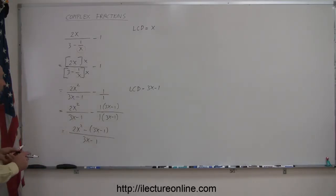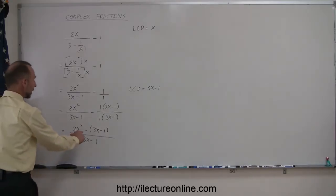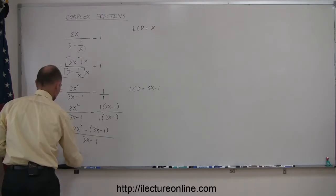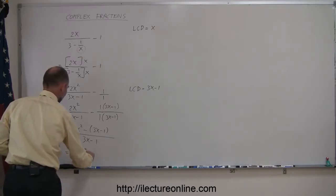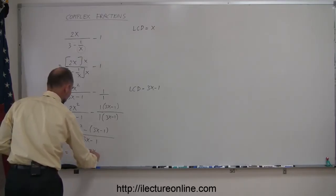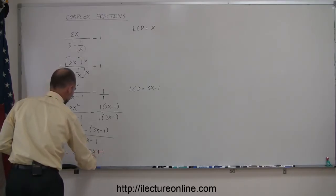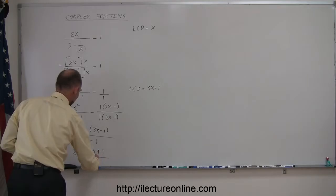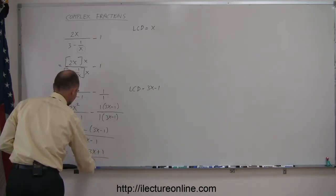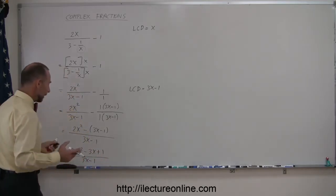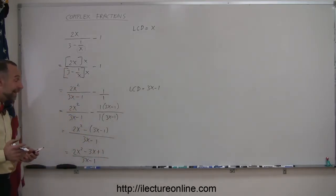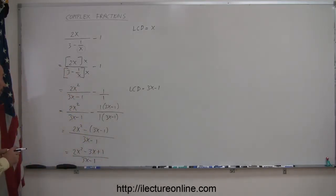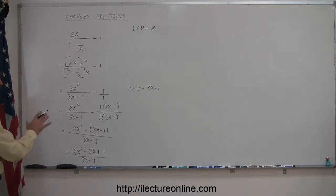Now I can go ahead and apply the negative sign, so this becomes 2x squared minus 3x plus 1, divided by 3x minus 1. And I think I'm done, unless the numerator is factorable.